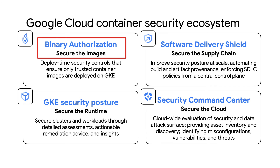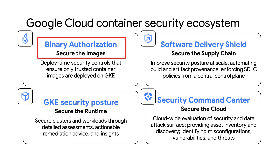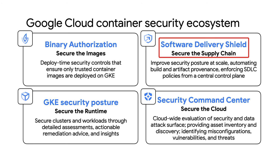The GKE security posture dashboard is just one component of the Google Cloud container security ecosystem. For example, binary authorization provides deploy-time security controls that ensure only trusted container images are deployed onto GKE. GKE security posture secures clusters and workloads through detailed assessments, actionable remediation advice, and insights. Software Delivery Shield improves security posture at scale, automating build and artifact provenance and enforcing SDLC policies from a central control plane.